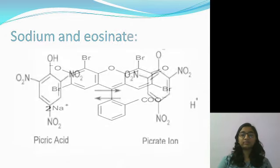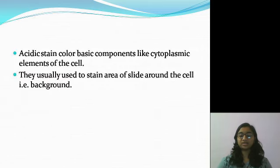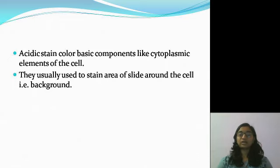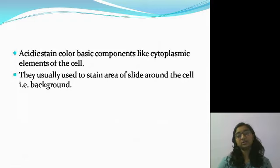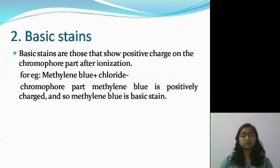We also saw the structure of eosin and took another example — picric acid. After that, we discussed that acidic stains are generally used to color the background of the slide. Besides this, acidic stains are also used to stain the basic components present inside the cell.